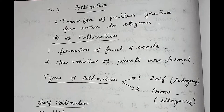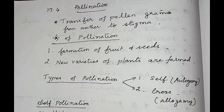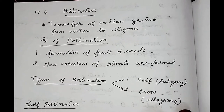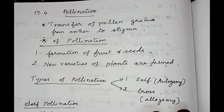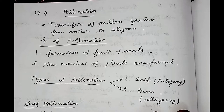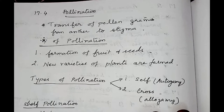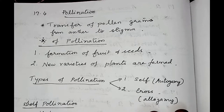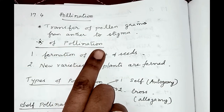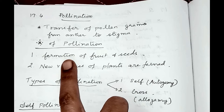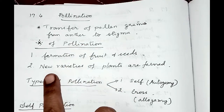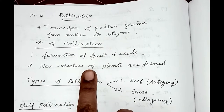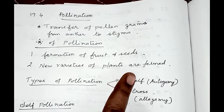The process of sexual reproduction in flowering plants involves pollination and fertilization. Pollination is the transfer of pollen grains from the anther to the stigma of the flower. Pollination is very important because only after pollination can fertilization take place, and fertilization only leads to the formation of fruits and seeds. The importance of pollination includes the formation of fruits and seeds, and it also helps in the formation of new varieties of plants through the combination of different genes in the case of cross-pollination.